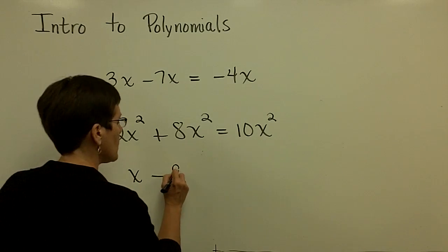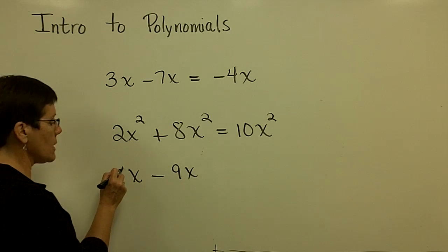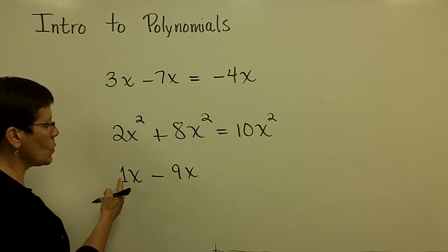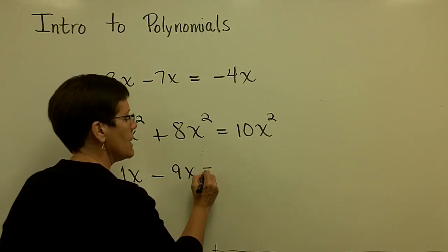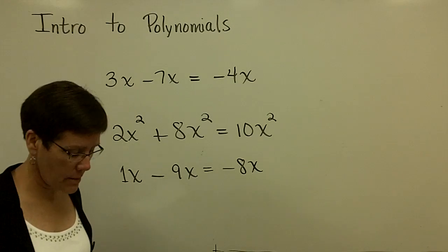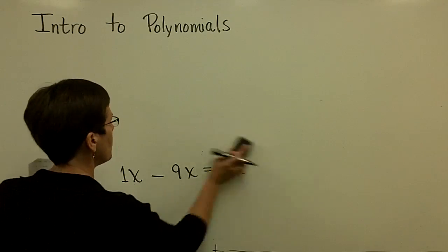Another one looks like this. And when I do not put a coefficient, it means that it's understood to be a 1. So when I combine these coefficients, 1 - 9 is -8 of those x's. And I've collected my like terms. I'm going to erase these and put a couple more up.